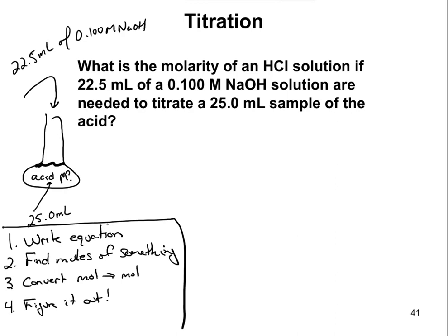Let's solve this particular problem. We're going to write out our equation: HCl plus NaOH. We're going to take the H⁺ and it's going to go to the OH⁻ to form water, plus the salt — in this case NaCl. For this one, there are no coefficients needed; everything is balanced as is. You always need to make sure that your equation is balanced. That's very important, because if you don't balance your equation, you're going to get the wrong answer.